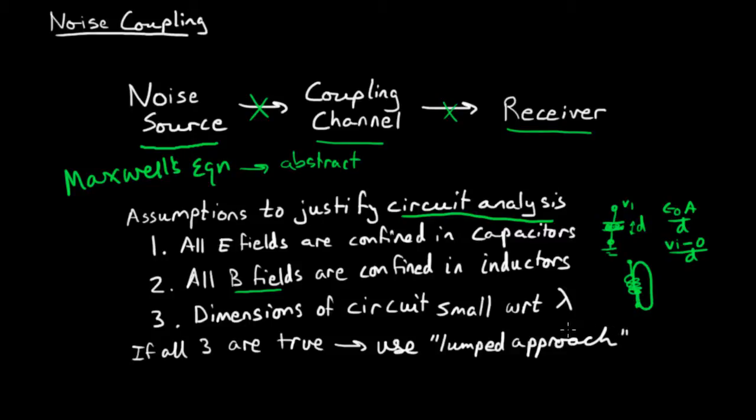The third thing is that the dimensions of the circuit are small with respect to lambda. And this is definitely not always true, especially when you get to high frequency design, transmission line considerations or waveguides. But for considering noise sources, they're often going to be lower frequency. If all three of these are true, you can use the circuit analysis approach, also you can refer to as the lumped approach where you have lumped elements.